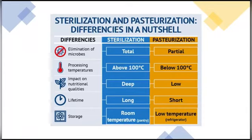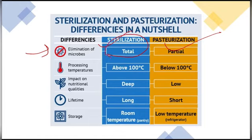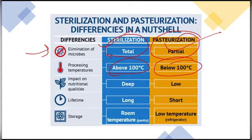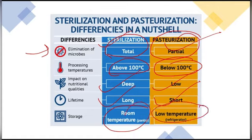The difference between sterilization and pasteurization is a most asked question. Sterilization eliminates all microbes; pasteurization eliminates only some. Sterilization is processed above 100 degrees Celsius; pasteurization is processed below 100 degrees Celsius. Sterilization impacts nutritional quality more; pasteurization impacts it less. Sterilization preserves food for a long time and can be stored at room temperature; pasteurized food has a shorter shelf life and requires refrigeration or low temperature.